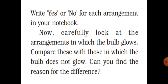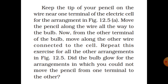Now carefully look at the arrangements in which the bulb glows and compare them with those in which it does not glow. Can you find the reason for the difference? Keep the tip of your pencil on the wire near one terminal of the electric cell and move along the wire all the way to the bulb, then from the other terminal of the bulb back to the cell. Repeat this for all arrangements. Did the bulb glow for arrangements in which you could not trace a complete path from one terminal to the other?